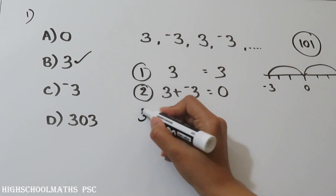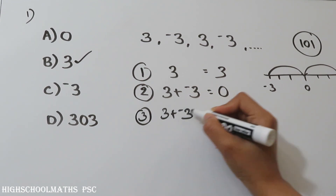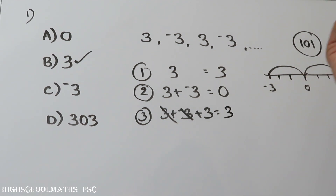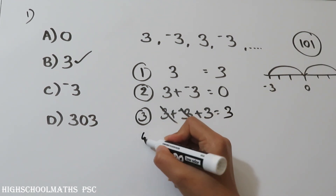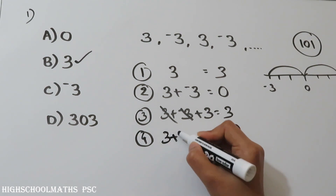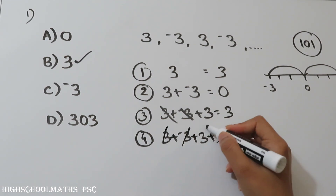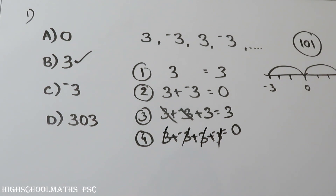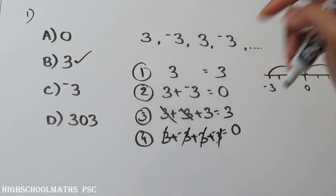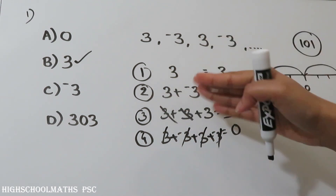What do we think about 3 terms? 3 plus minus 3 plus 3 — if you cancel the pairs, it will be 3. That is, 3 plus minus 3 plus 3 plus minus 3: the pairs cancel. The first term remains for odd numbers of terms, like 1, 3, and so on.